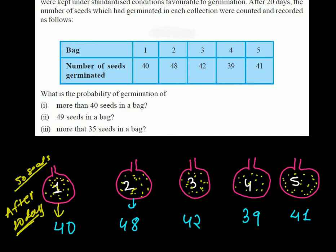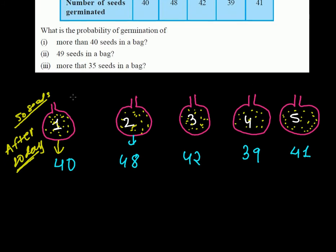Now we have to work with probability in this problem. The question asks: what is the probability of germination of more than 40 seeds in a bag? That means, how many such bags are there in which the number of seeds that germinated is more than 40? So, 40 — we cannot take bag 1 because it's equal to 40, not more than 40. 48 — we can take that, it's more than 40. We will not take bag 1.